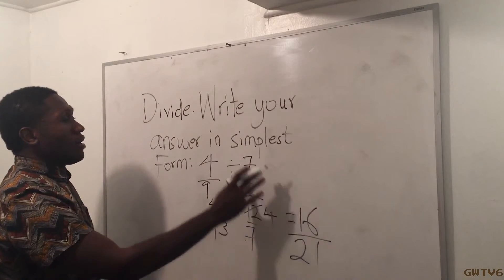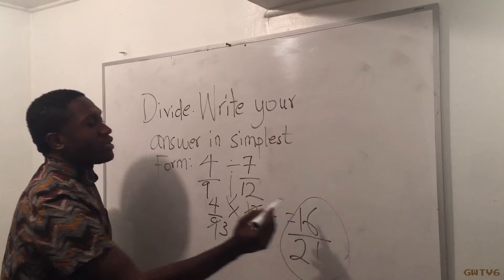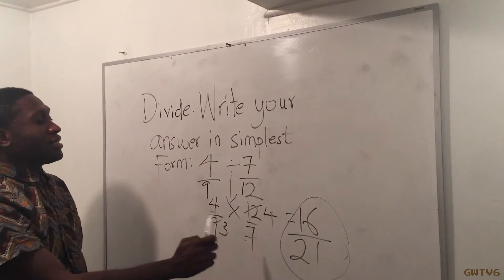And now that it's in simplest form, I'm just going to leave it like that as my answer. So the answer is 16 over 21.